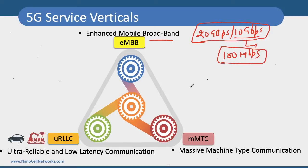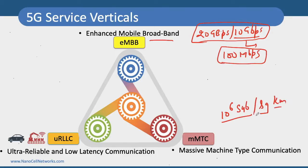However, in case of mMTC, data rates are not that important. What we are looking at is 10 to the power of 6, which is 1 million subscribers per square kilometer. So in a given square kilometer we are expecting 1 million subscribers.